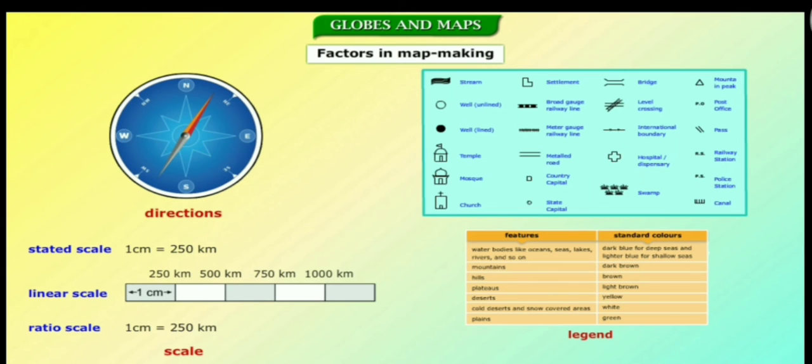We use symbols and colors to represent various places on a map. Legends are inserted into maps to explain what these symbols and colors stand for.